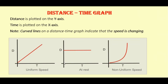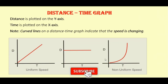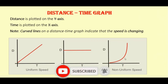Here the distance is plotted on the y-axis and time on the x-axis. A line parallel to the x-axis means time is increasing but distance is not changing — the object is at rest. For example, if a car is parked at a parking lot for one, two, or three hours, the time is changing but there is no change in distance, meaning the object is at rest.